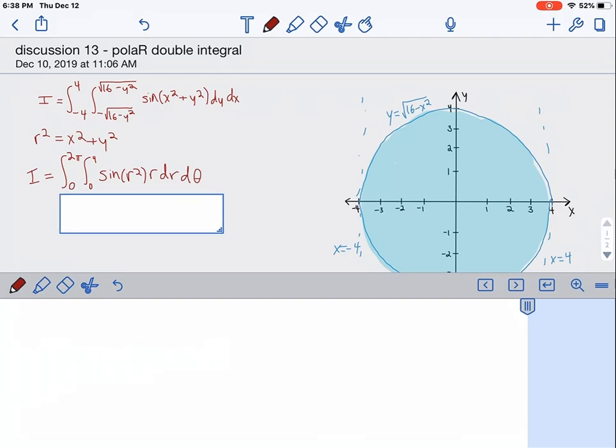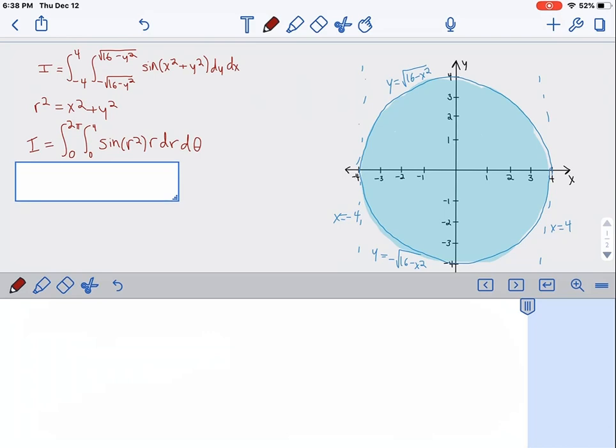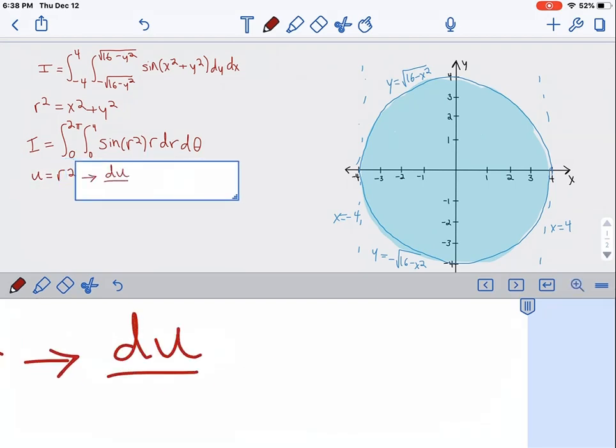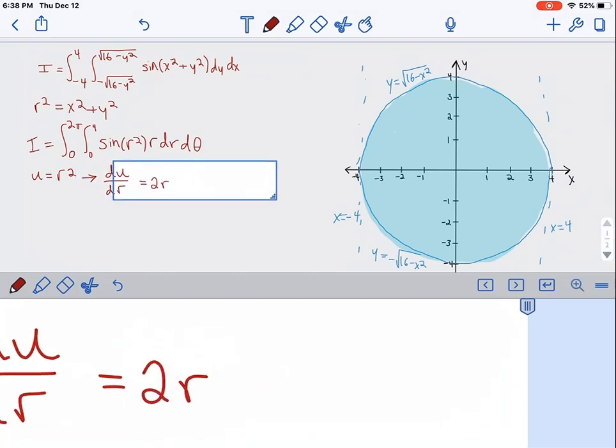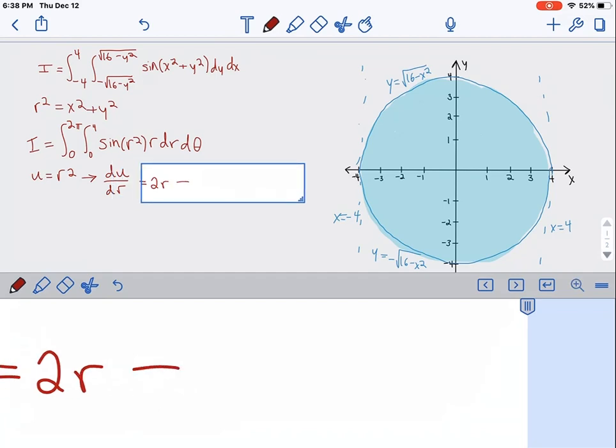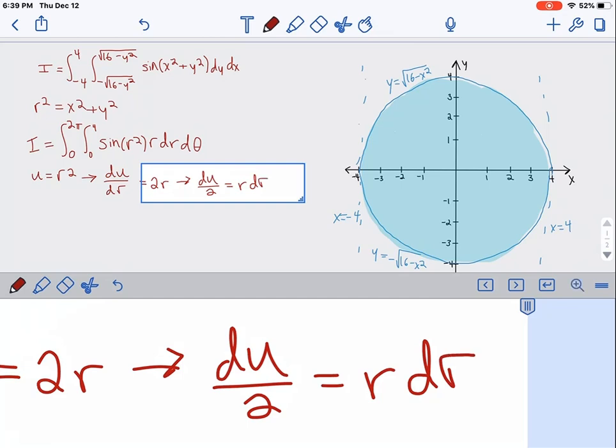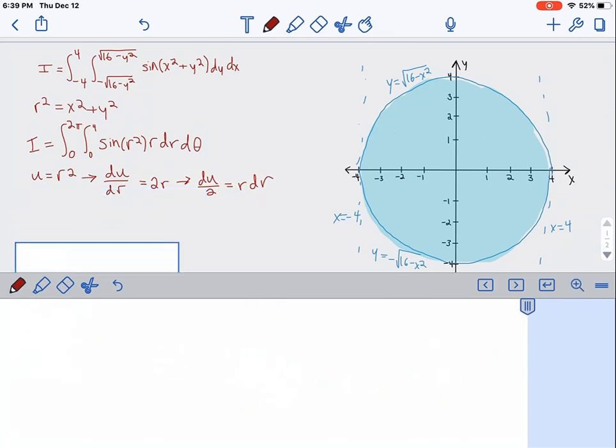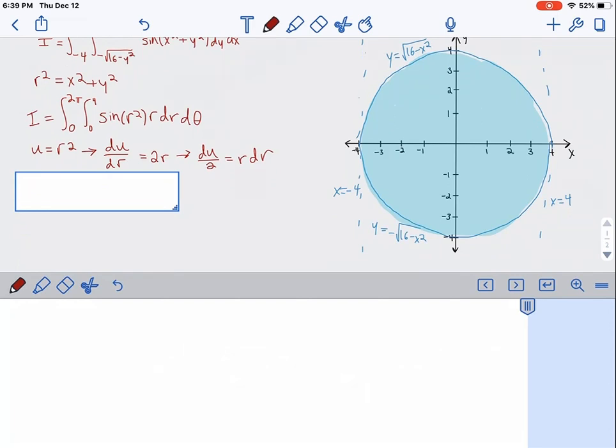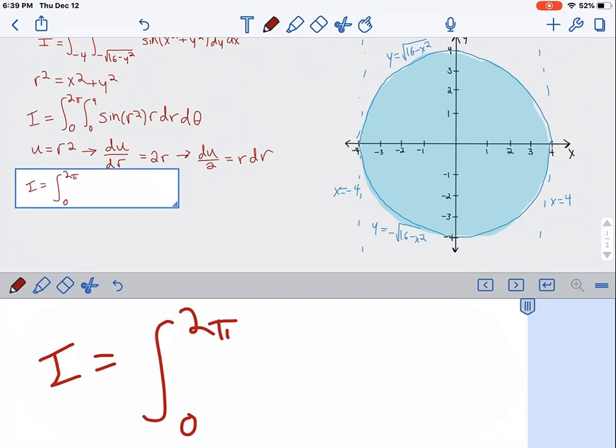The best way to go about this is probably a u substitution. So u equals r squared implies that du over dr equals 2r, which means that du over 2 equals r dr. We can replace that in the integral.